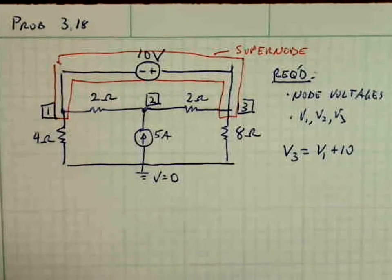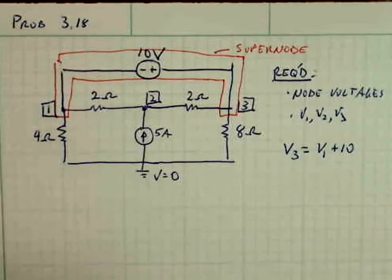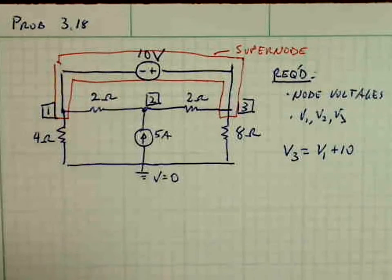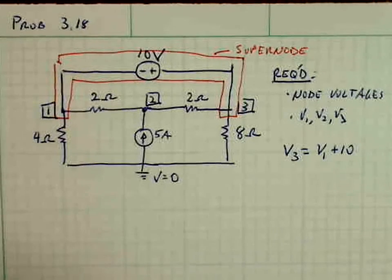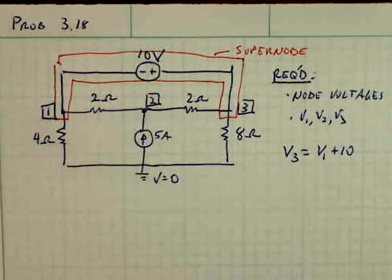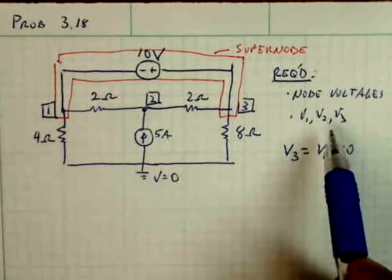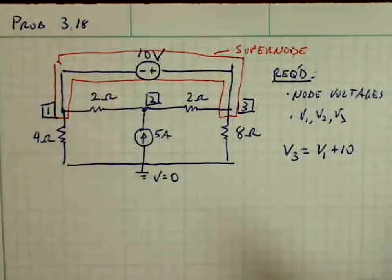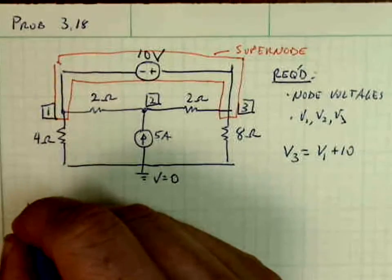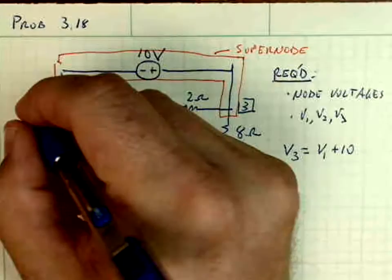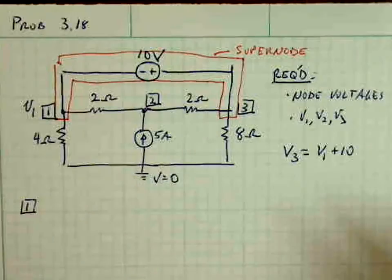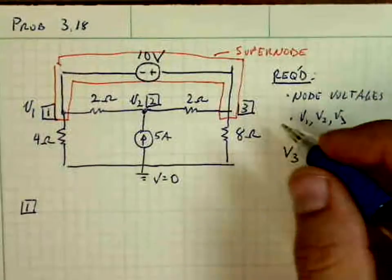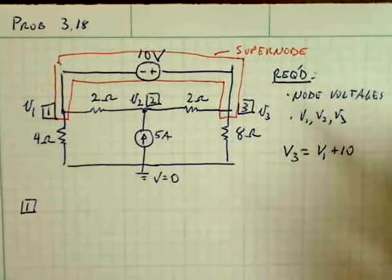So now what we're going to do is do KCL at some of these nodes and see what equations we're going to need to come up with the voltage at every node. So let's just start at node 1, and the voltage at 1 I'll call V1, of course, at node 2, V2, and node 3, V3.